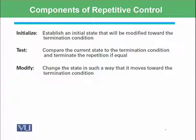The first component is initialize: establish an initial value state that will be modified toward the termination condition. Second is the test: compare the current state to the termination condition and terminate the repetition if equal. And third step is modify: change the state in such a way that it moves toward the termination condition.